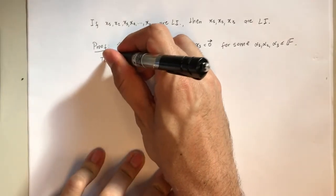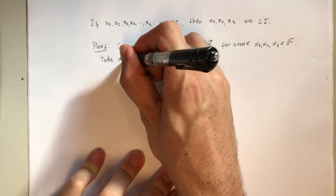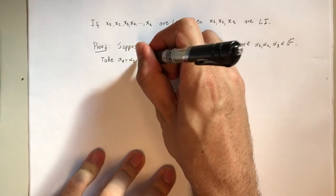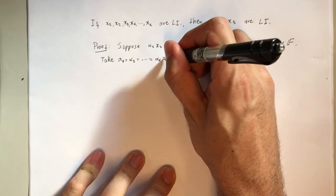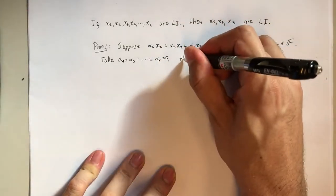So, take alpha4 equal alpha5 equal up to alphak, all equal to 0. Then,